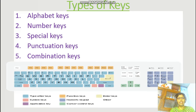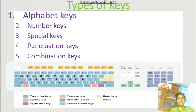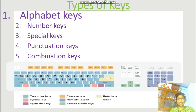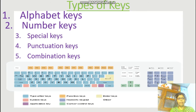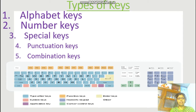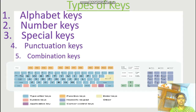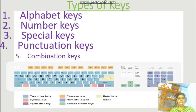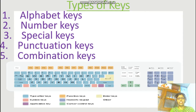Types of keys. There are 5 types of keys. First, alphabet keys. Second, number keys. Third, special keys. Fourth, punctuation keys. And fifth, combination keys.